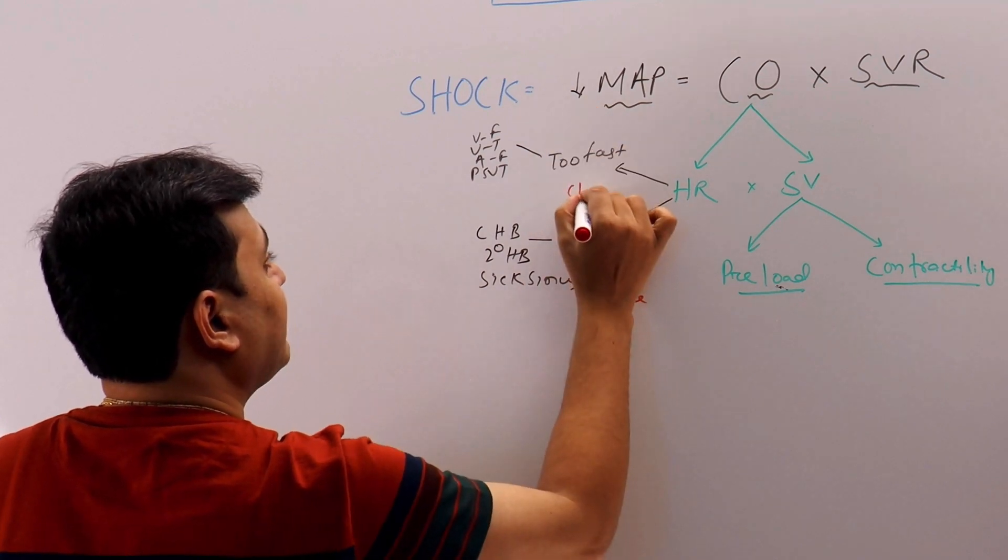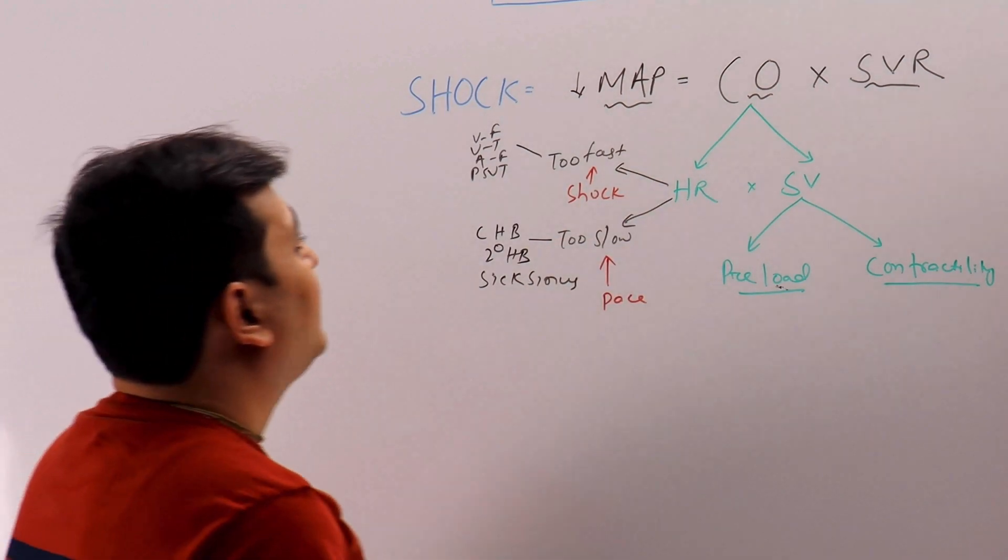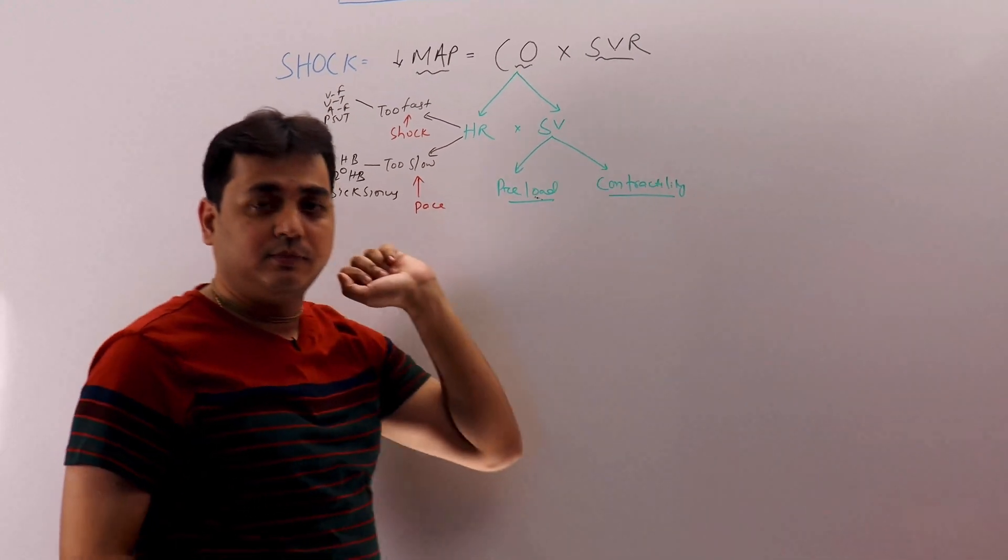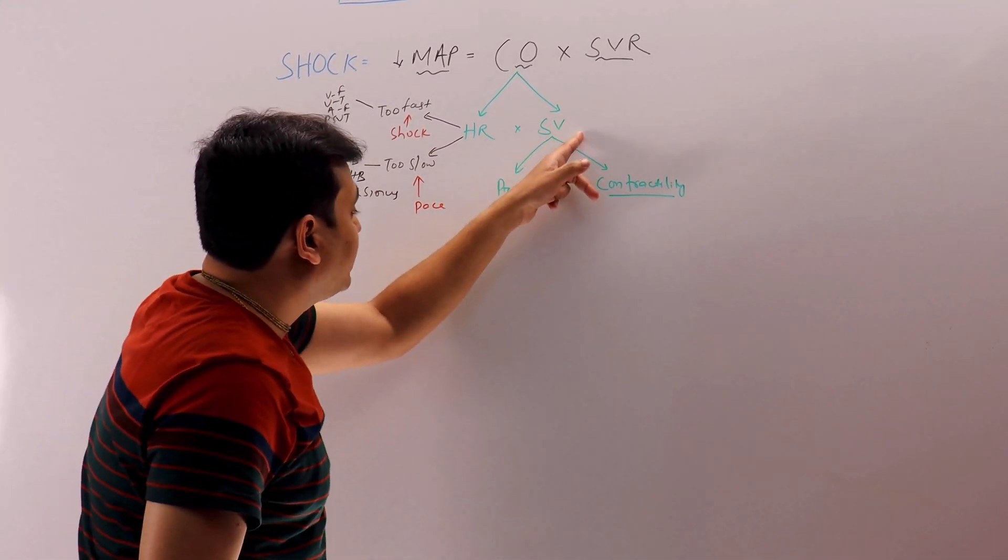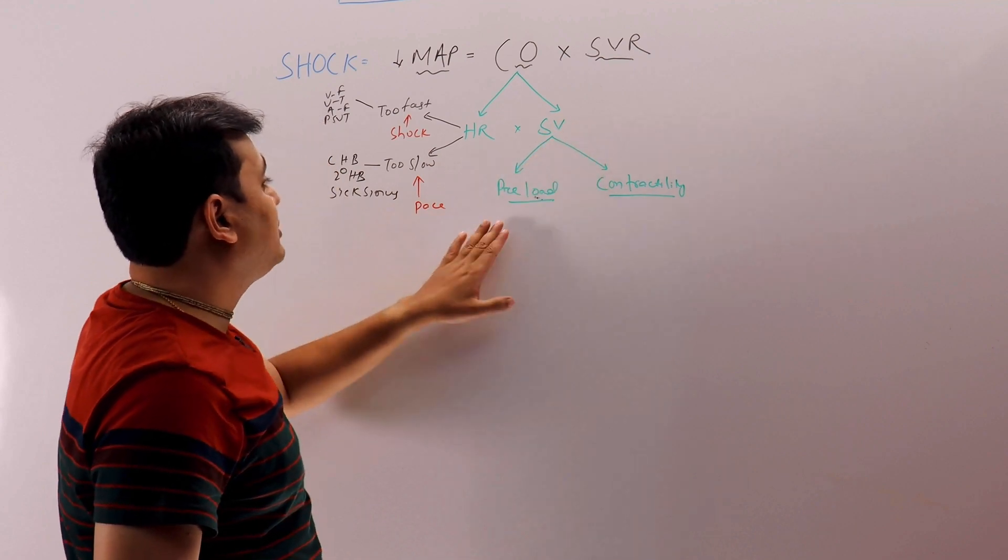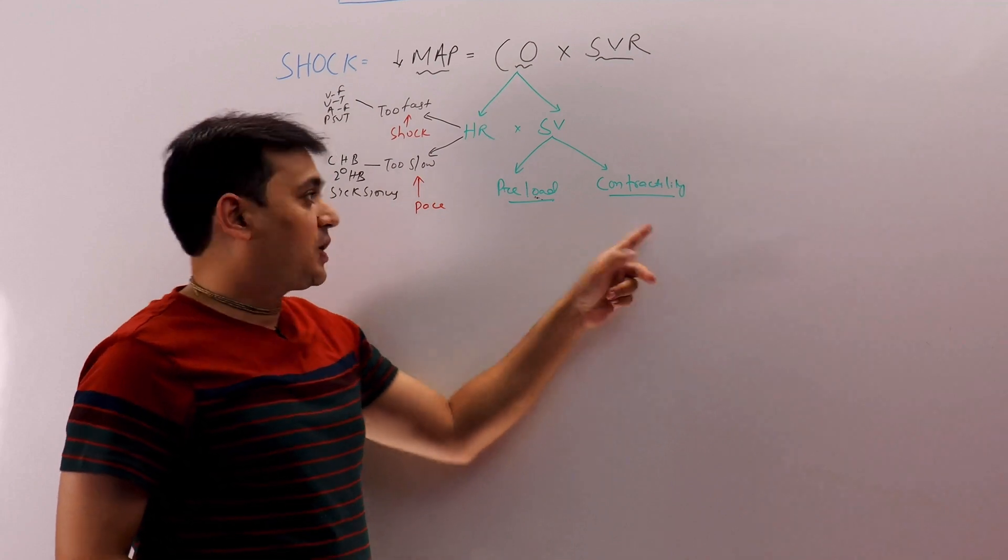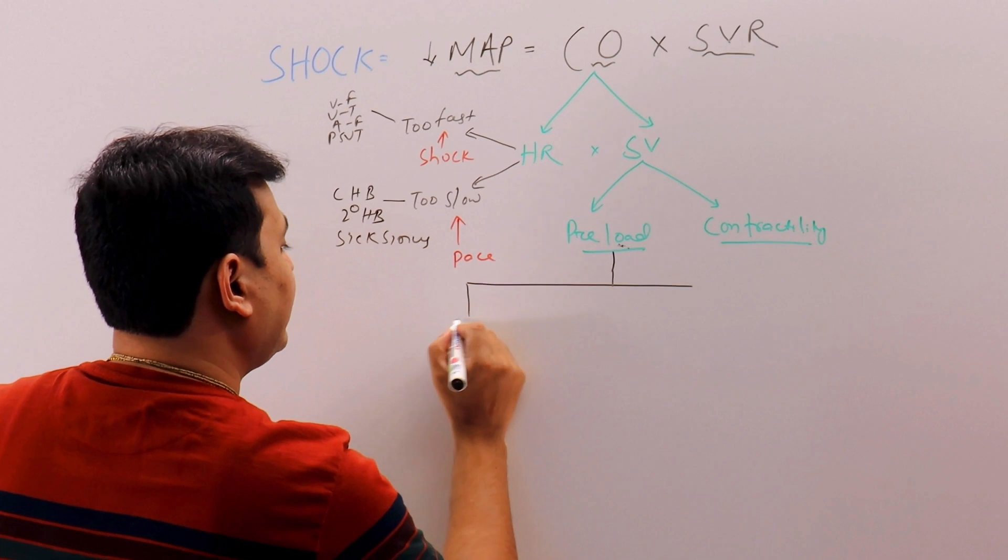Now let's say the patient's blood pressure is down but the heart rate is normal. So now the next problem can be in the stroke volume, and stroke volume problem can be divided into two types: either it is a problem with the preload or with the contractility. Problem with the preload can be divided into two types again.